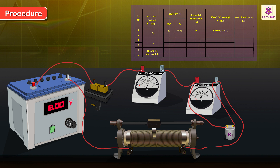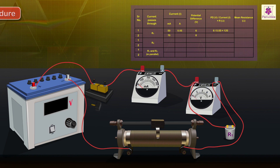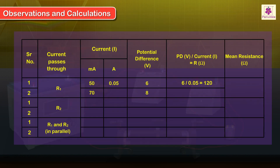Procedure: Obtain one more set of readings by applying a different value of PD, say 8 volts, then switch off the current. Observations and Calculations: For potential difference 8 volts, a current of 70 mA, that is 0.07 A, flows through the circuit. Calculate the value of R1 by applying Ohm's law. R1 is equal to 8 upon 0.07, which is equal to 114.29 ohms.